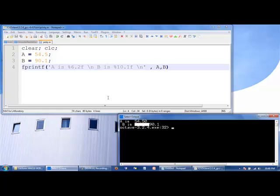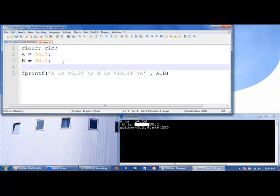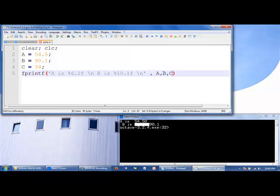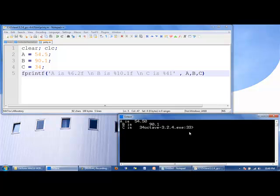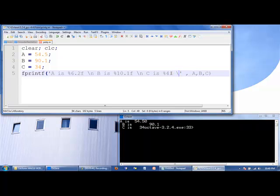We also can mix different types of data in the same fprintf, so we'll say c is equal to 34. And we will print c here, and let's add some more text inside of these single quotes here. So c is percent, we'll say 4i. We run the code. Oh, let me put a slash n at the end, because I forgot to say go to a new line when you're done executing. So that's why this octave is right next to this 34.